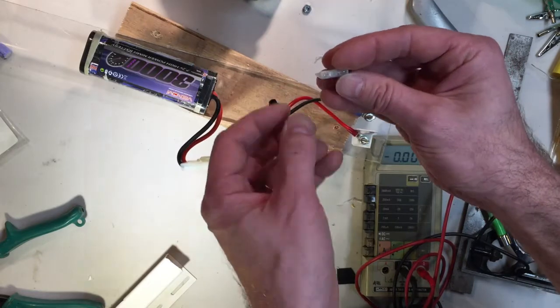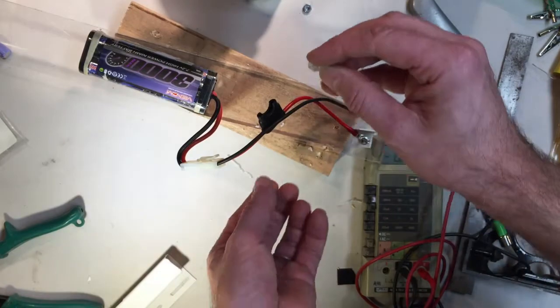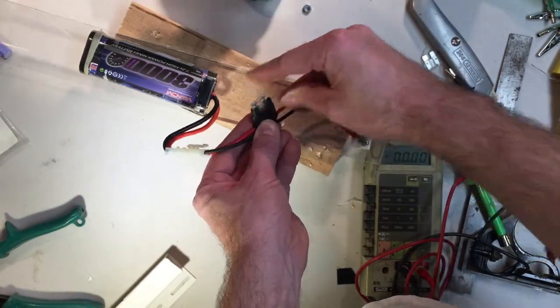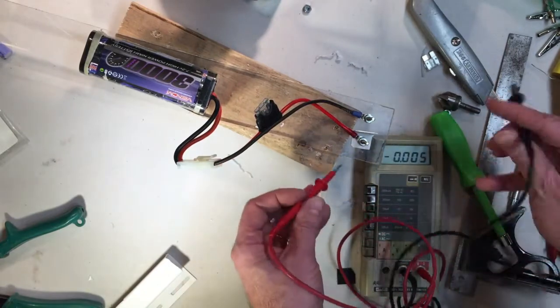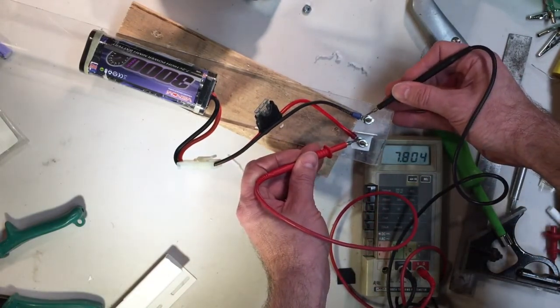So I got a new 25 amp fuse. It says 25 right on the face here. You might not be able to see it on the camera. So I'll plug the 25 amp fuse in, which is hopefully good. Measure my voltage. And I'm getting 7.8 volts.